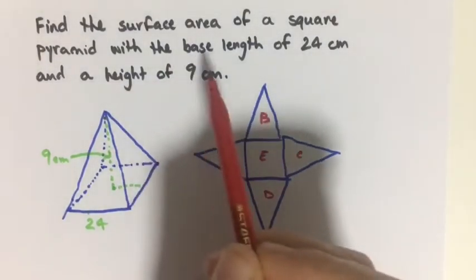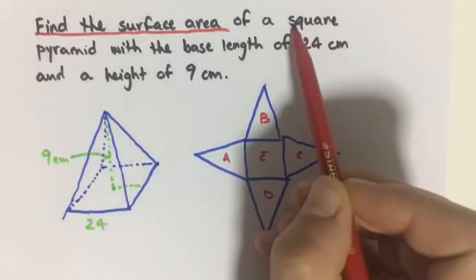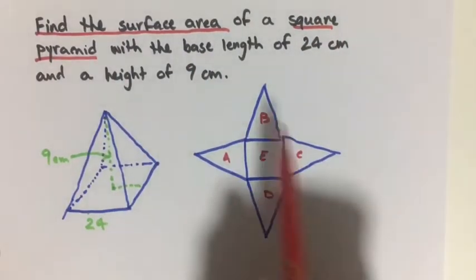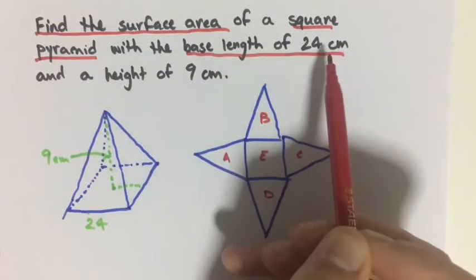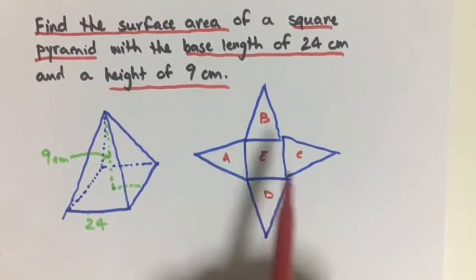So what is important, we want to find the surface area of a square pyramid with a base length of 24 and the height of 9. So you can see I've already got it drawn out and have our height is 9 and our base is 24, and I have our net here.